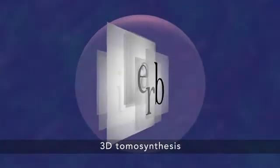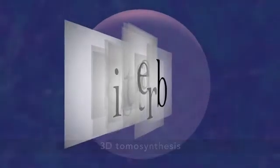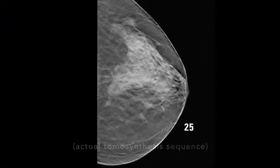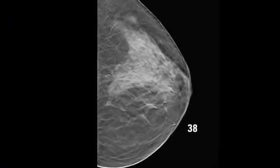3D tomosynthesis is different because it shows your tissue in very thin layers, almost like turning pages in a book. That makes it easier for doctors to see if there's anything to be concerned about. There's less chance for a cancer to hide behind overlapping tissue.